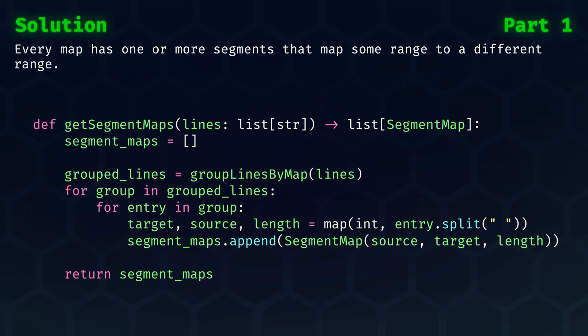Then of course we have our parsing function to get those segment maps. I won't dive into the full extent of parsing the input text file, but the key message here is that every transition of property has multiple segments, which map ranges. Hence we return a list of segment maps.